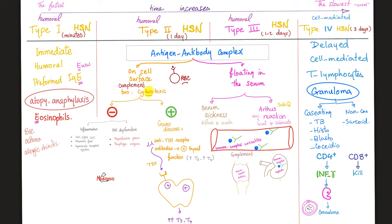They stimulate the target organ in only one case: Graves' disease. There are antibodies against the TSH receptor. These antibodies come and stimulate the target — it's as if TSH is binding to its receptor, producing a similar effect. TSH tells the thyroid gland to secrete thyroid hormone, so Graves' disease, in a sense, is a Type 2 hypersensitivity reaction.